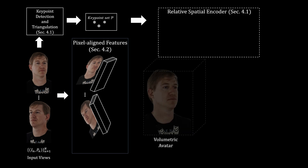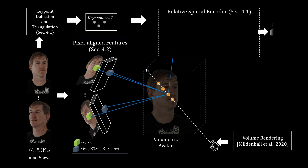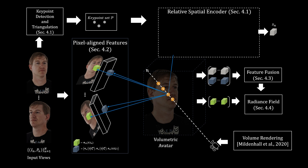To render an image from a novel view, we employ volumetric rendering and sample points on the ray. For each point, we query pixel-aligned features and compute a relative spatial encoding. These two types of features are fused and condition the radiance field, which predicts density value and blends input pixels to output the view-dependent color value.